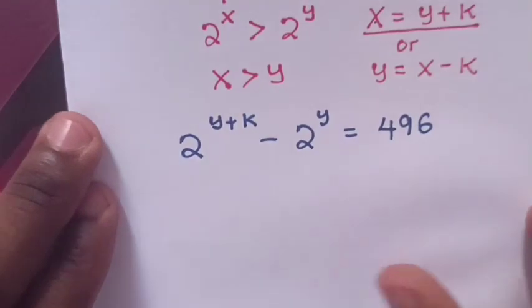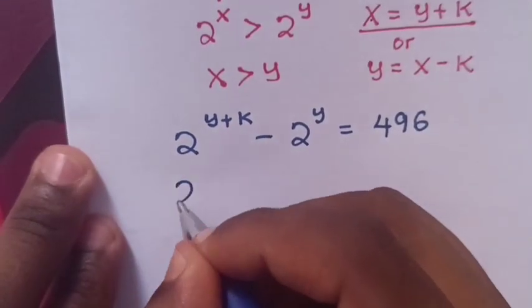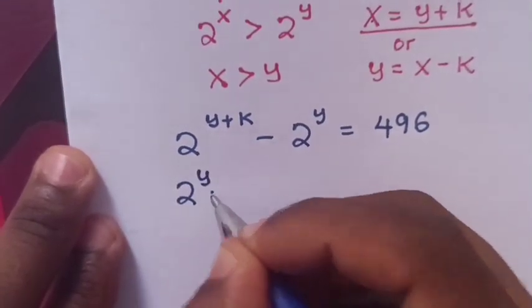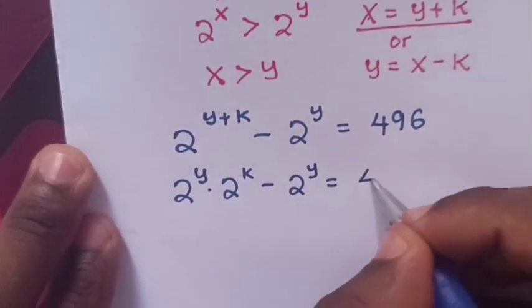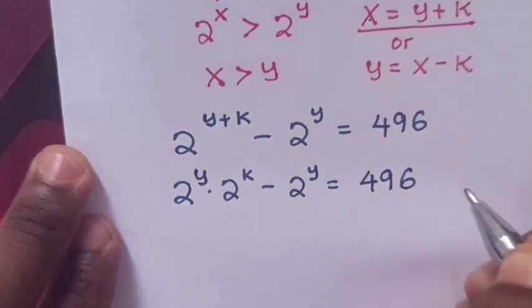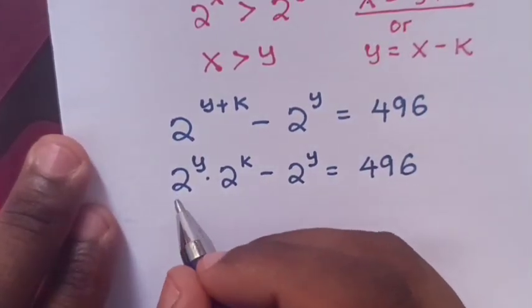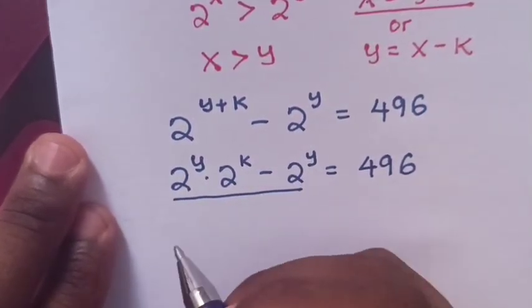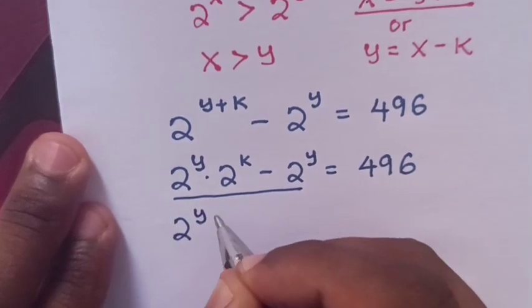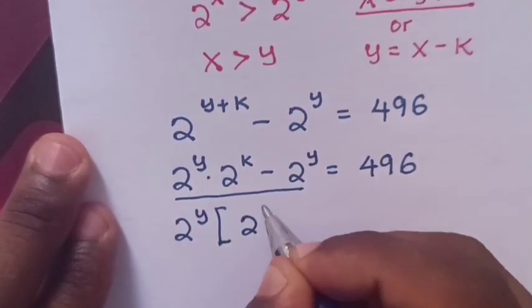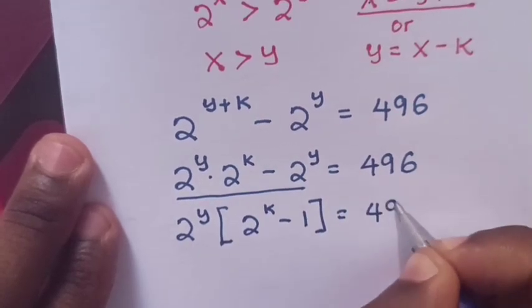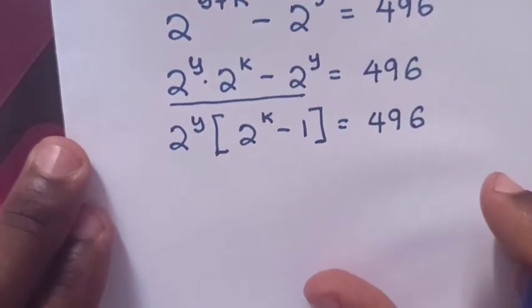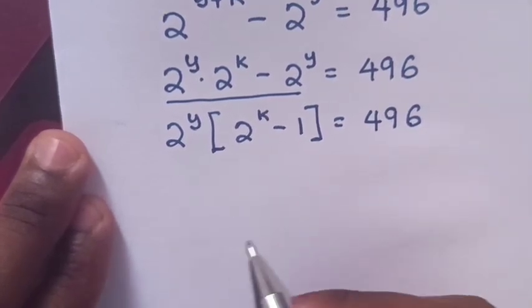Addition of powers is the same as multiplication of exponents with the same base, so it will be 2 power y times 2 power k minus 2 power y equals 496. Then 2 power y is common, we take it out of bracket: 2 power k minus 1 equals 496.